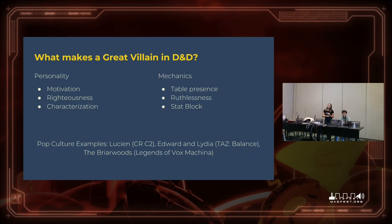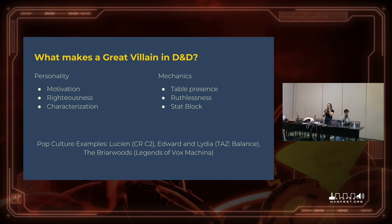Next, we're going to go specific to D&D or tabletop games — what makes a great villain in D&D, because they are distinct. We've divided this into two overall categories. First, personality: you've got motivation, righteousness, and characterization — your indirect and direct characterization, what people say about them versus how they portray themselves, and whether those align with one another. Second category is mechanics — which isn't quite the right word, but it's the closest title. That includes table presence: how you say things, the way you present yourself.